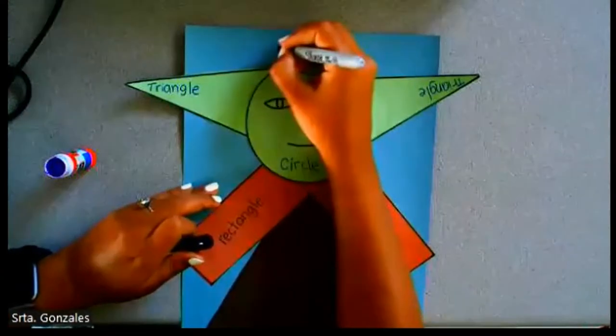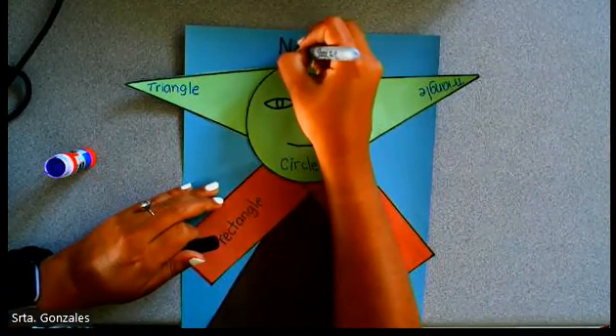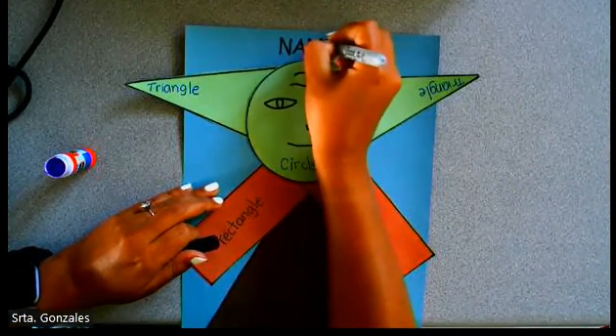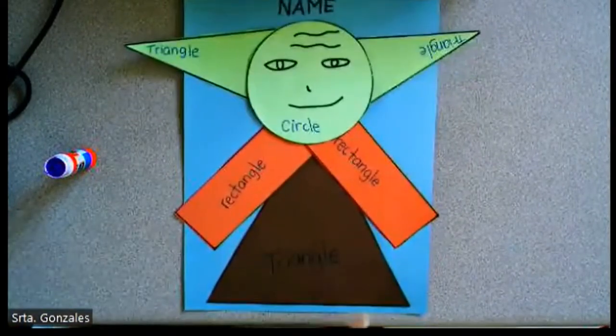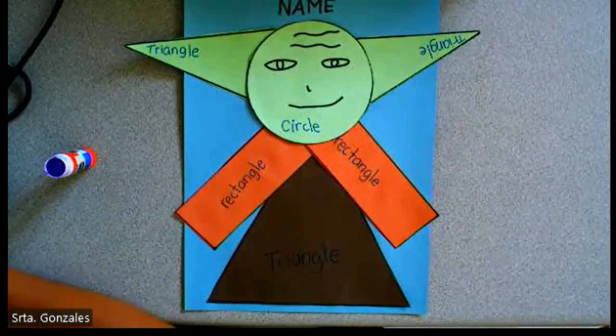Lastly, we will write our name. We can see that we made a face with the circle, arms with a rectangle, and the body with a triangle. Thank you.